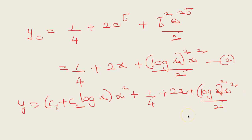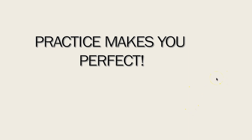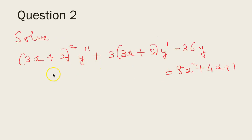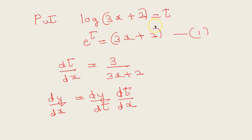Practice makes you perfect — take a pen and paper and work along. Keep working until you are able to master the problem and do it without looking. For the second question: solve (3x + 2)²y'' + 3(3x + 2)y' − 36y = 8x² + 4x + 1. This is a Legendre's equation, so we put log(3x + 2) = t, or 3x + 2 = e^t.